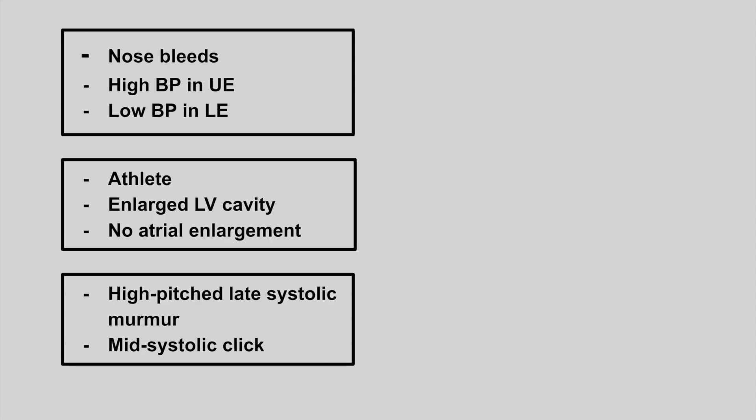The next one is someone who presents with nosebleeds, high blood pressure in the upper extremities and low blood pressure in the lower extremities. This is coarctation of the aorta, which is associated with Turner's syndrome.